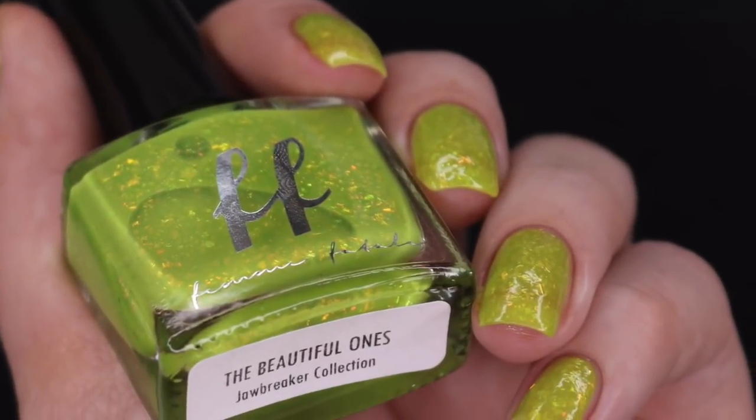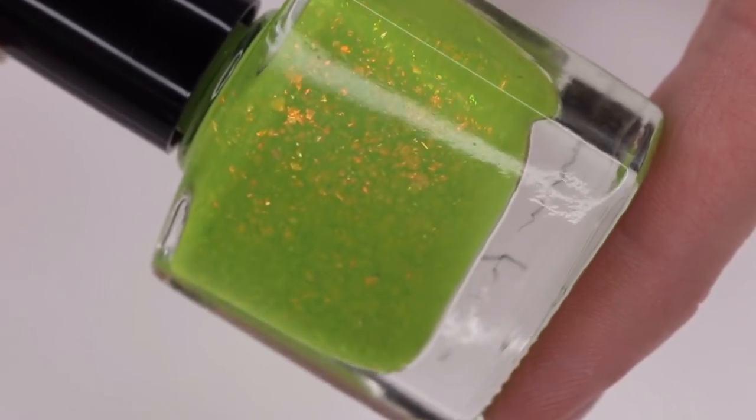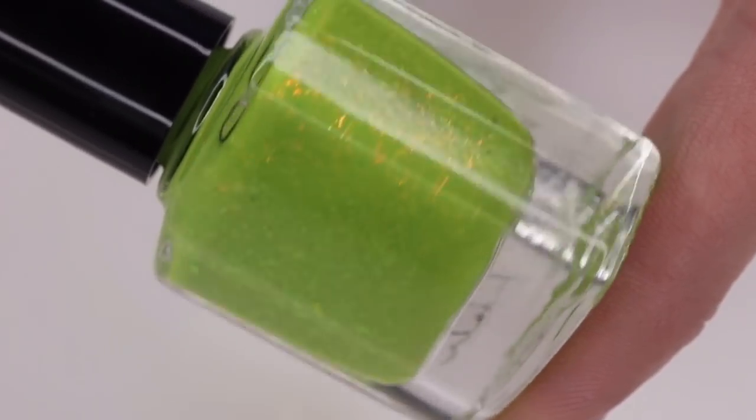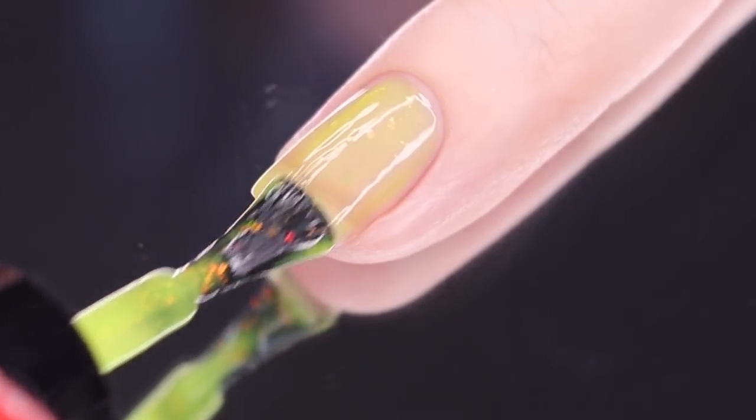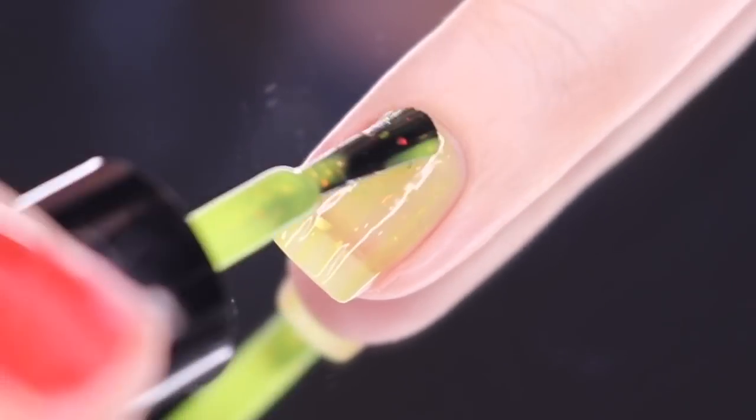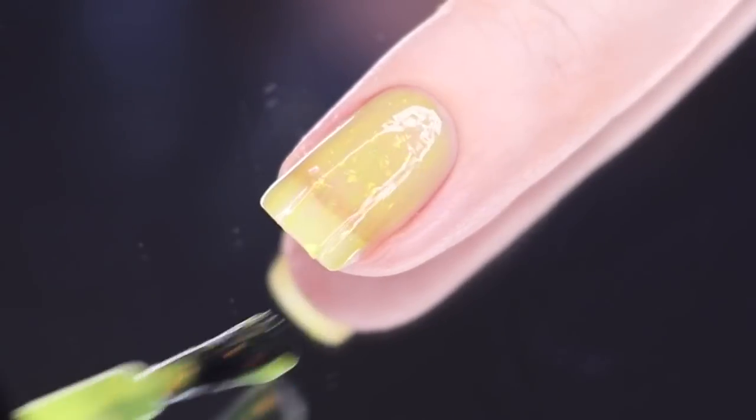These last two polishes are really making me crush on summer vibes. First up is The Beautiful Ones. This one is described as a vibrant, juicy lime green that's packed with red iridescent flakes. This one is a little bit of a crelly base, but it leans towards more of a jelly. So it is going to be a little bit sheer. It is one that you're going to have to build up.